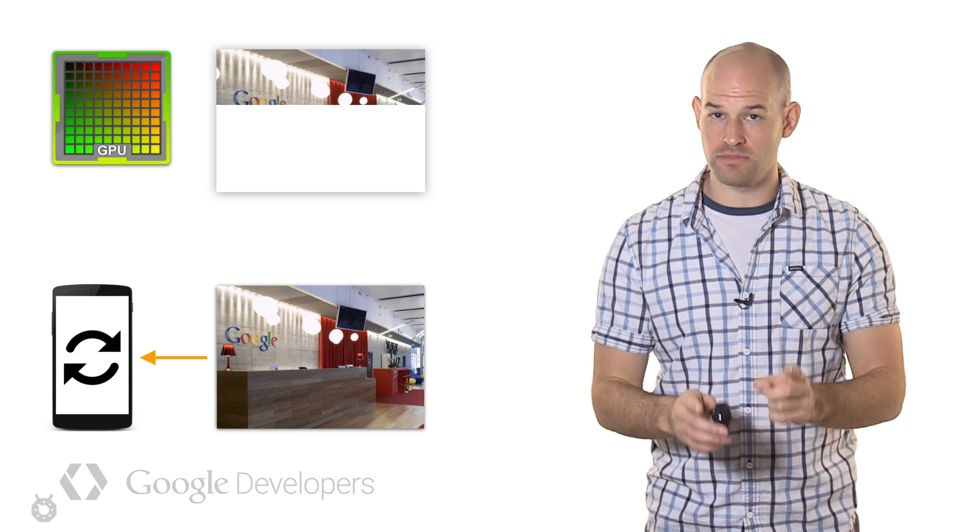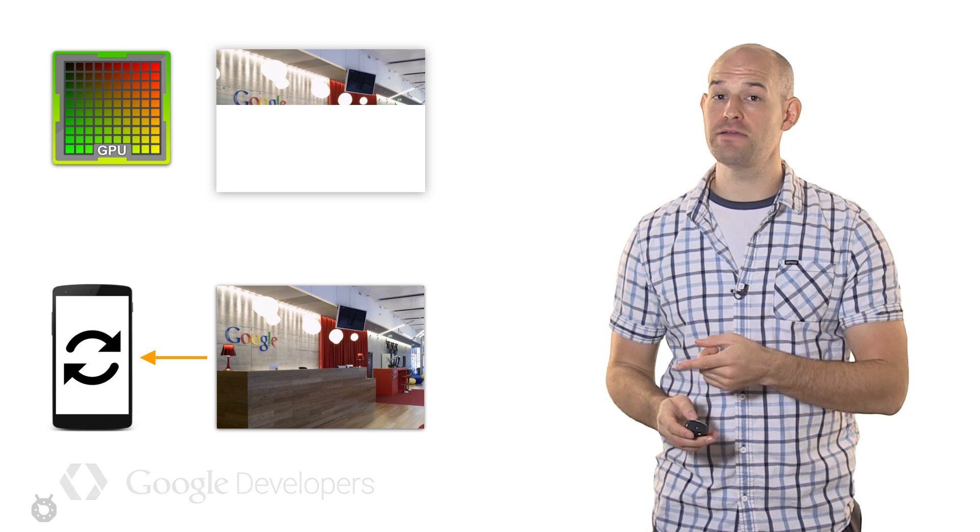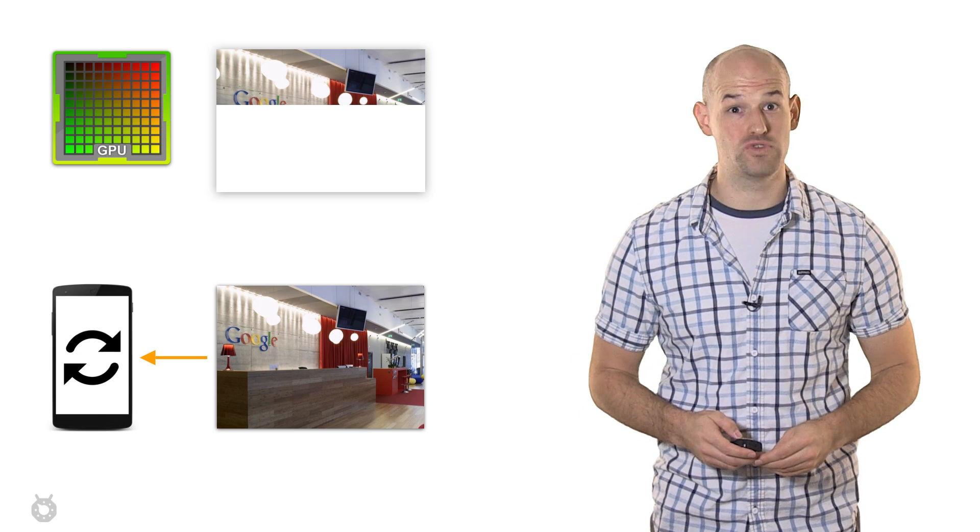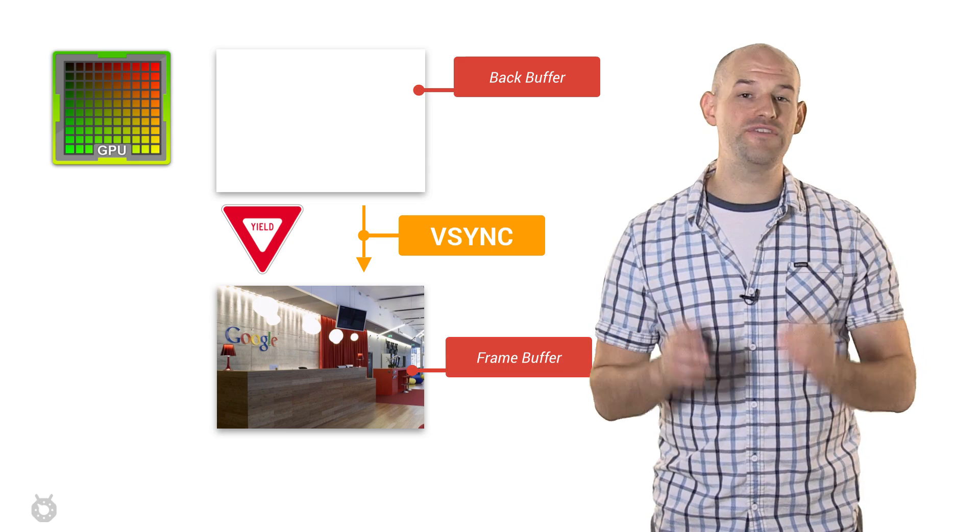Now, when the screen comes along to refresh, it'll do so from the frame buffer, which isn't in the middle of a draw operation. This is where VSync comes in.